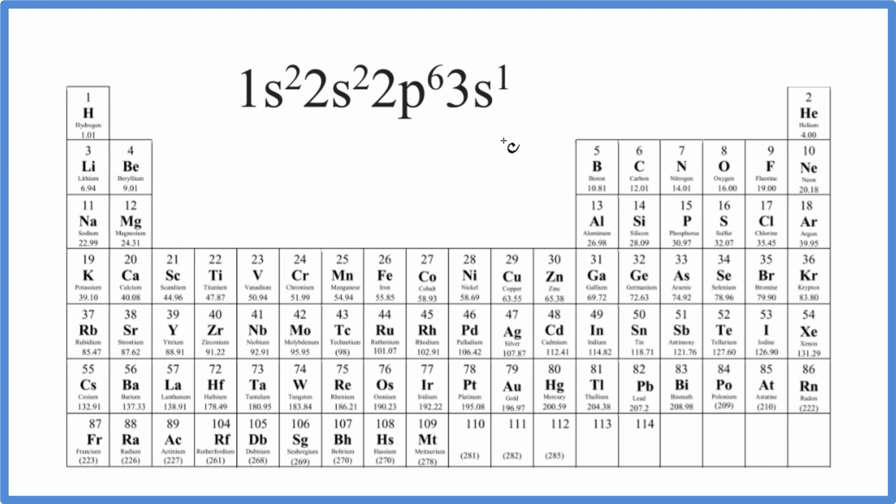So there are two ways we could do this. First, we could just count up all of the electrons. So we have a total of 11 electrons for this electron configuration here.